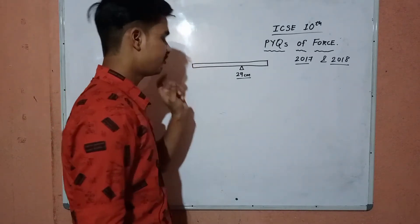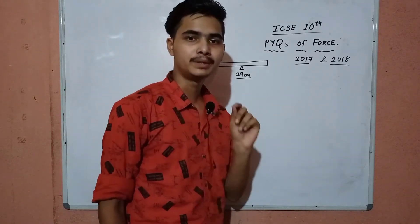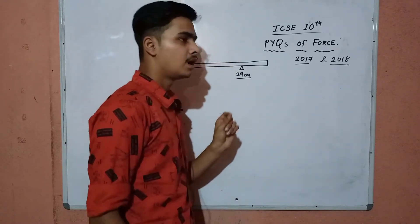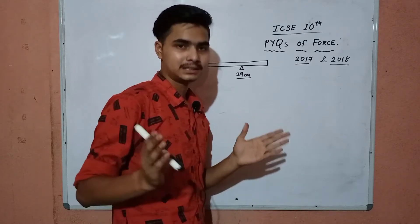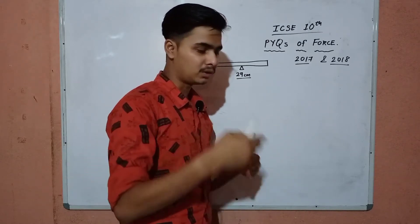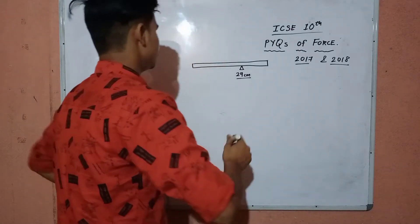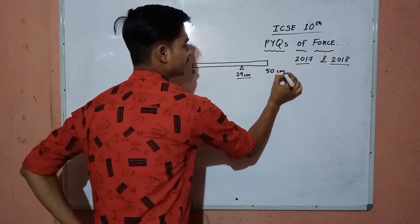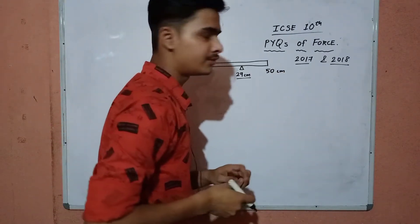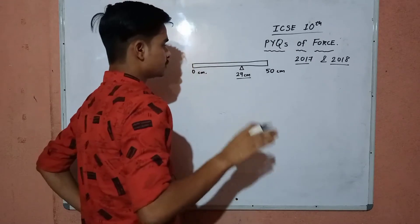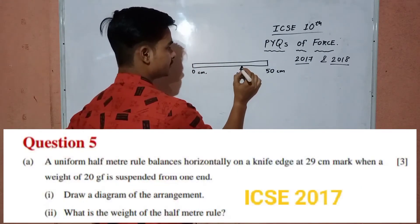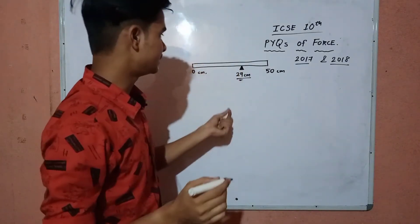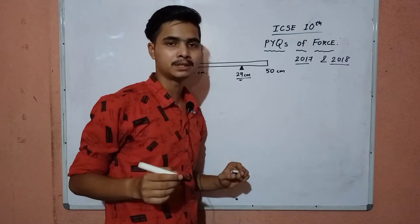According to the question, there is a half meter rule. As I explained in my previous videos, a uniform meter rule has a length of 100 centimeters, but since this is a half meter rule, the length is obviously 50 centimeters. The question says there is a knife placed at the 29 centimeter mark — so we place the knife at that position.